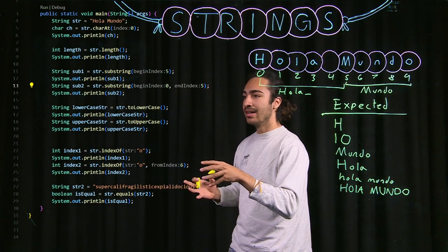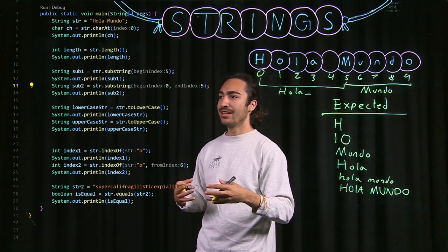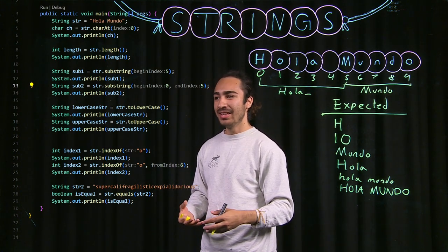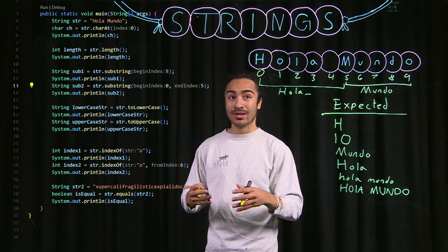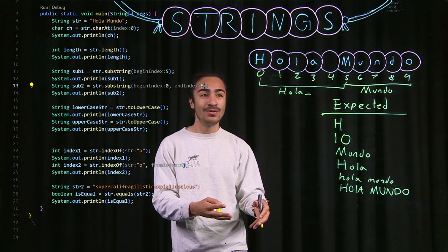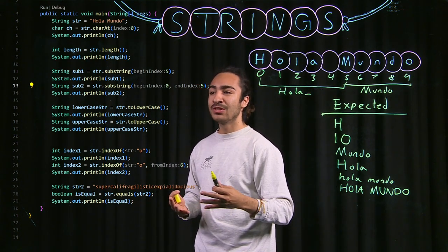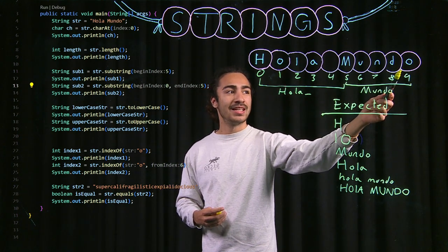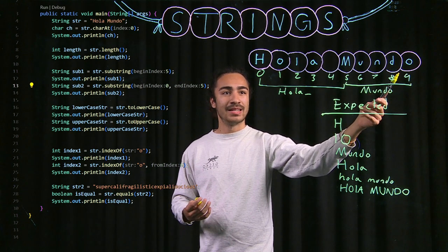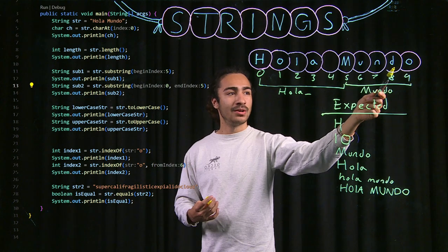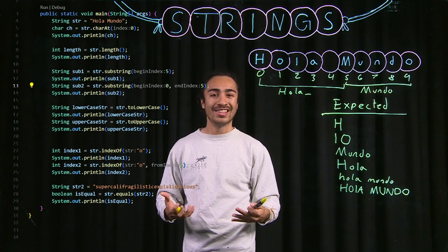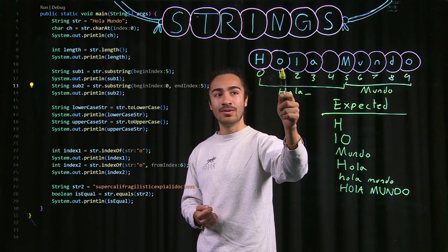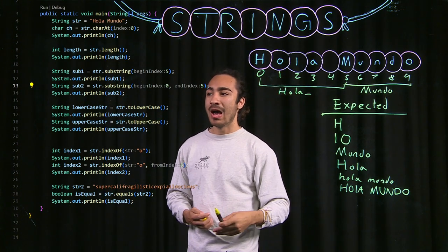Second to last is indexOf, which you can think of as the exact opposite of charAt, which can get confusing at times. Just know indexOf, you want to give it a character, and it will give you the index at that character. There's two versions of this, because let's say you have two characters of the same type. I have two O's here. Which one will it give me? It will give you the first occurrence of that character. If I give it just O, it will give me 1.